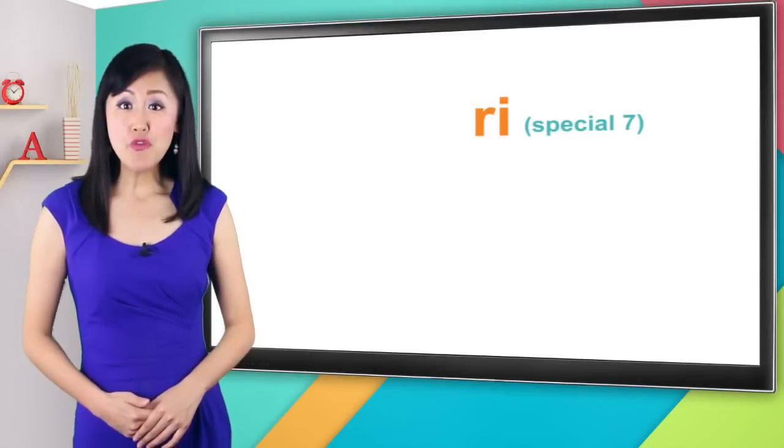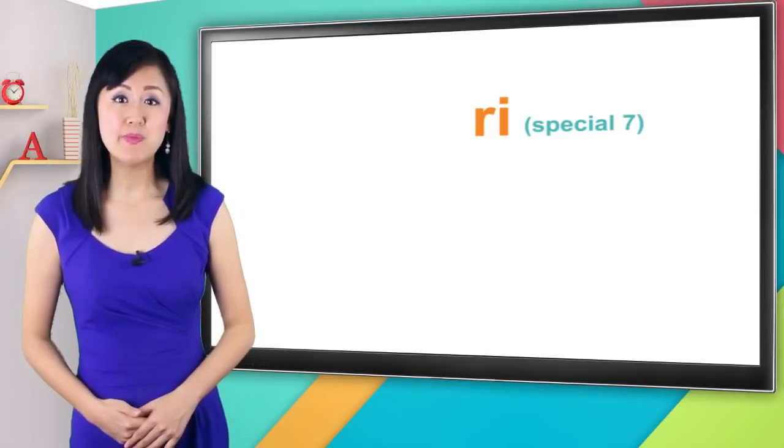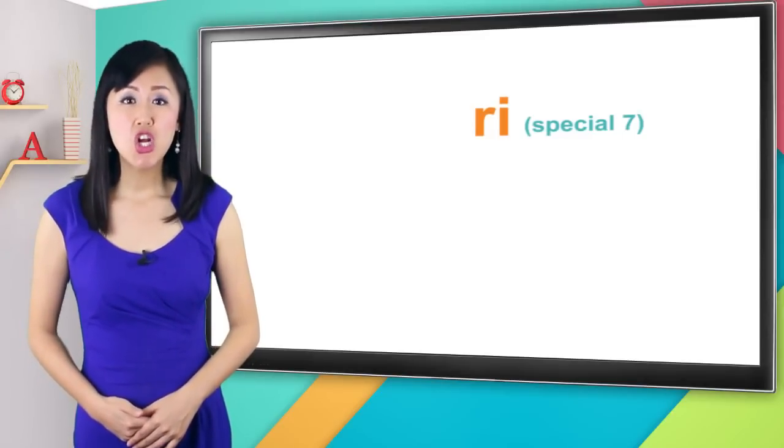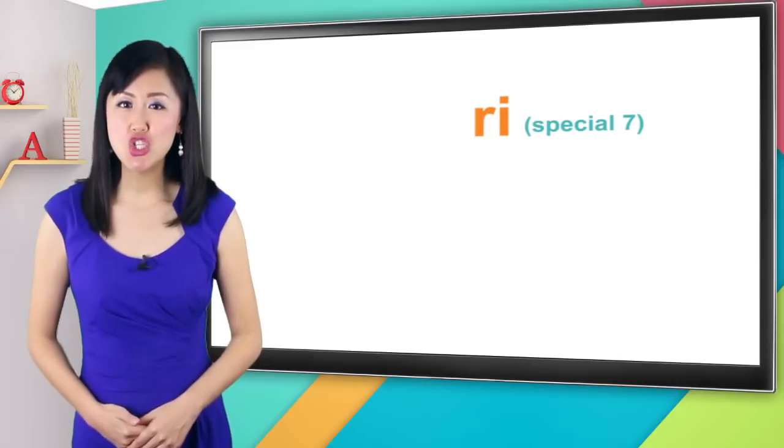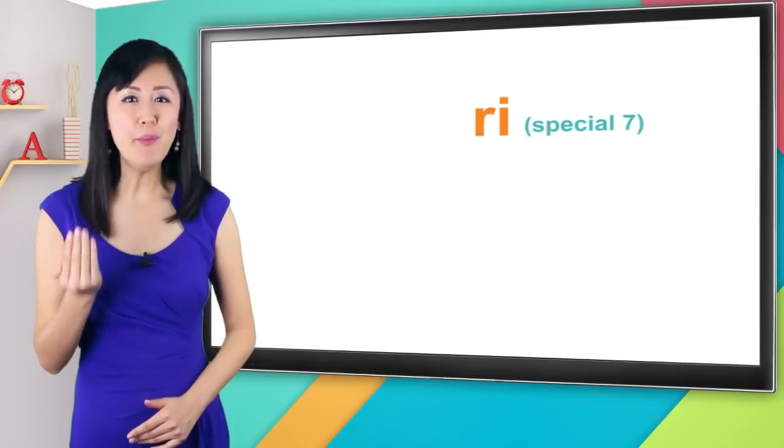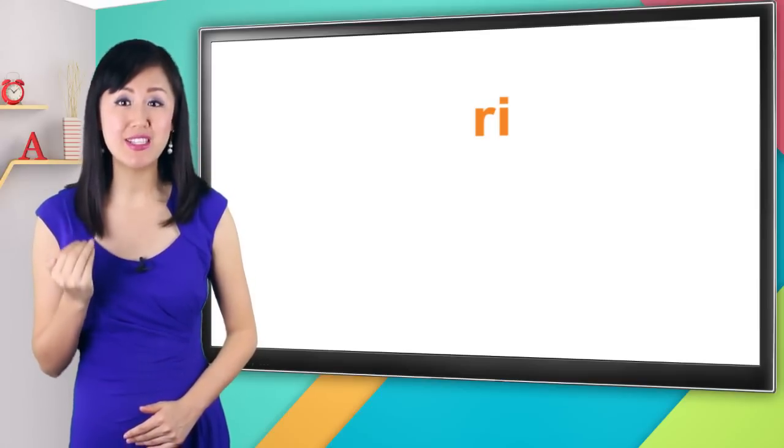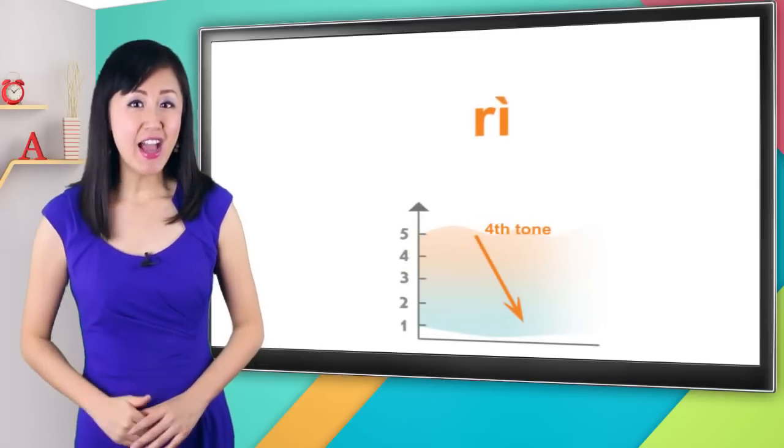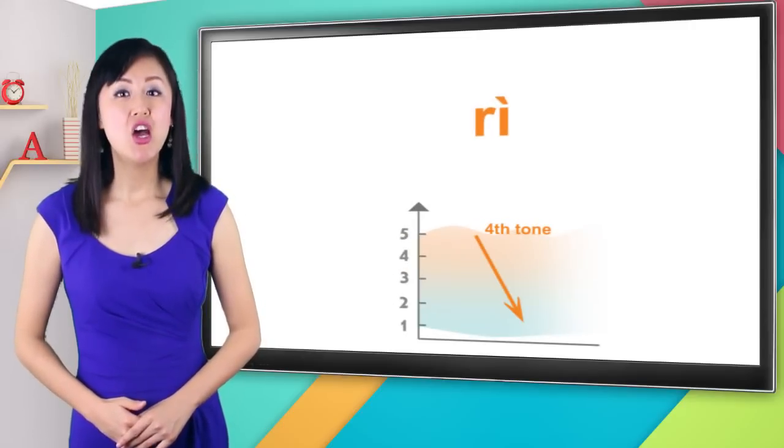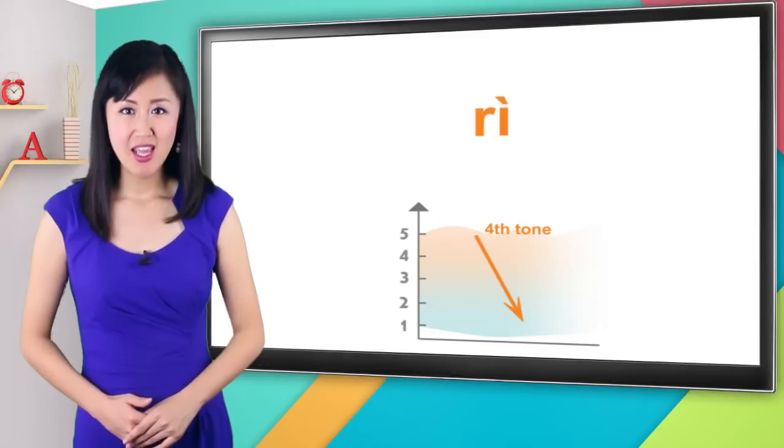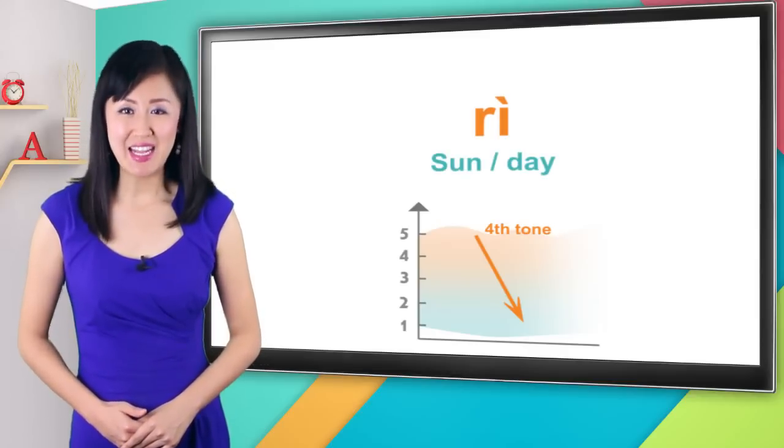So how do you say the word hot in Chinese? It's rè. R-E fourth tone. And let's go over the special seven syllables spelled R-I. It's pronounced rì. Keep that tongue curled up and back and make sure you voice it. And now give it a fourth tone. Rì. That means sun or day.